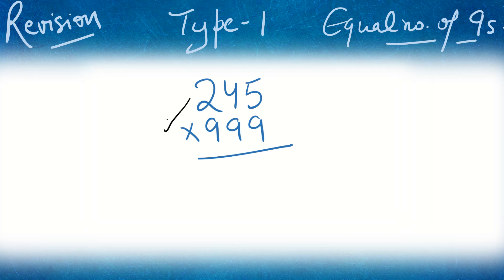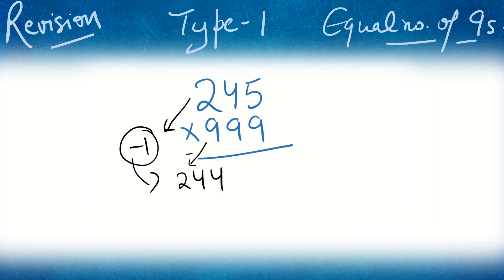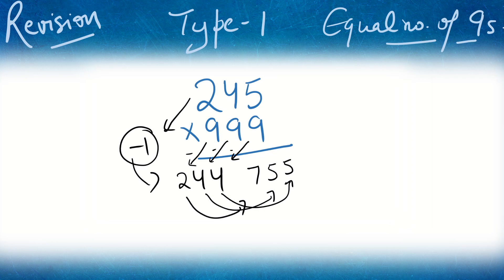In Type 1, take this number — in Step 1, subtract 1 from the first number. That gives you the LHS (left-hand side) of the answer — the first half. Here it's 2, 4, 4. Now subtract those digits from nines: 9−2 is 7, 9−4 is 5, 9−4 is 5. So 244755 is the final answer. Subtract 1, then subtract all digits from 9. That's it.